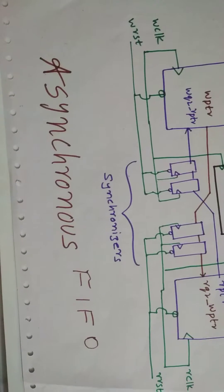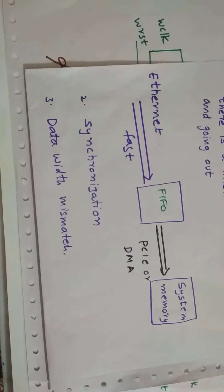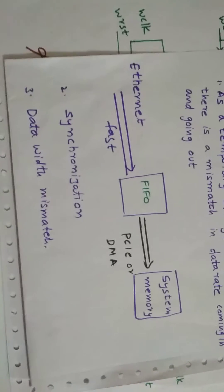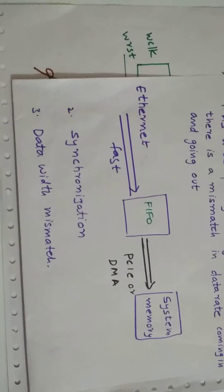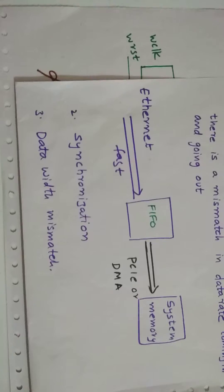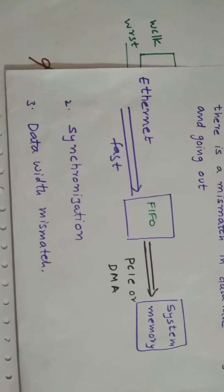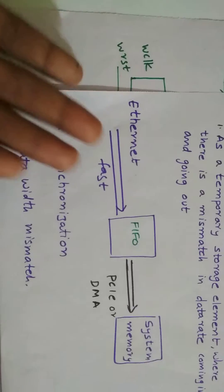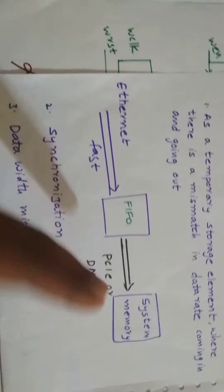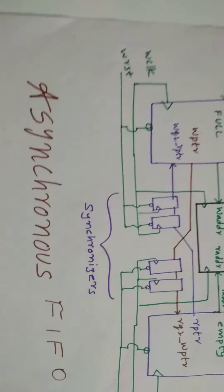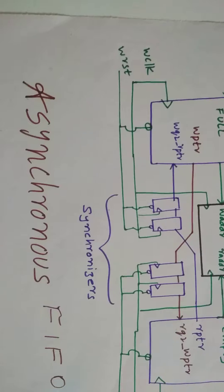I'm going to give you an example. As you can see over here, Ethernet dumps the data which it gets from the network to the FIFO, and the data from the FIFO can be read at any time by PCIe and used by the system. Here, we have Ethernet using a different clock and PCIe using a different clock. So, asynchronous FIFO is about doing different operations on different clocks.